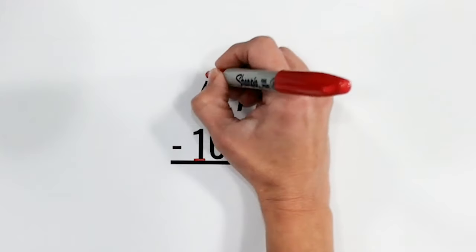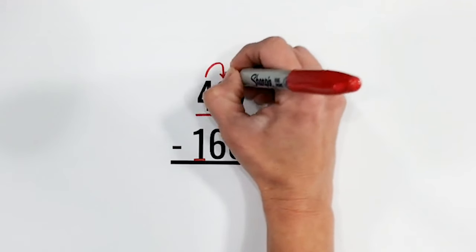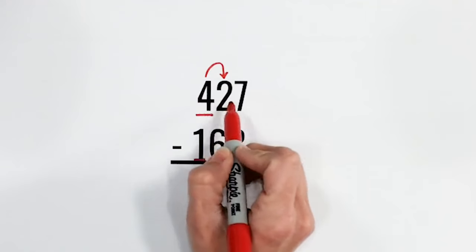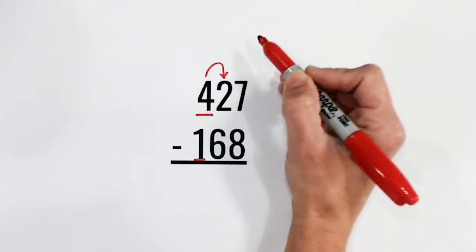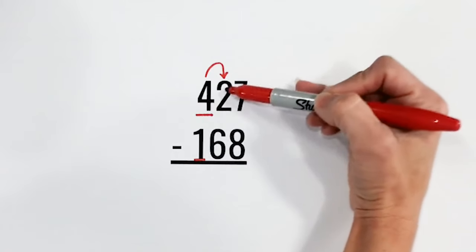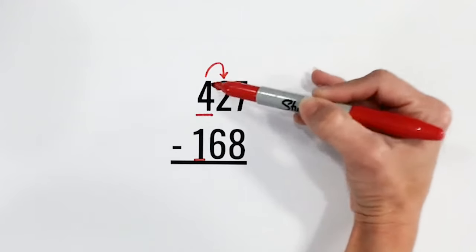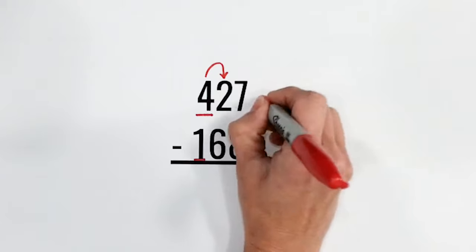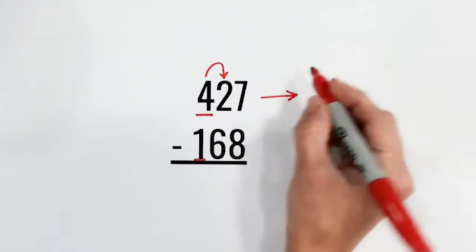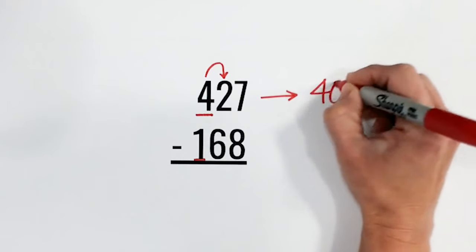And we're going to use those rounding skills that we learned in our previous series. So we're going to look at our number next door, which is a 2. And I know if it's 5 or more, I'm going to raise the score or round up. Or if it's 4 or less, which in this case, it's a 2, that 4 is going to stay the same. So that means that 427 is closer to 400 than 500.